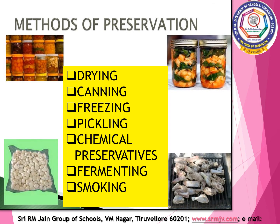Cooked or uncooked food can be preserved in different ways to be used later. Some methods of food preservation are drying, canning, freezing, pickling, chemical preservatives, fermenting and smoking.